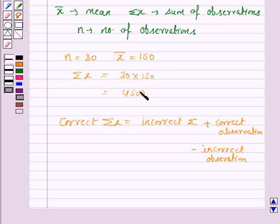This is the incorrect sum because in this sum one observation of 165 was wrongly copied as 135. That means we need to add 30 more to it, because this sum contains the observation as 135 in place of 165.